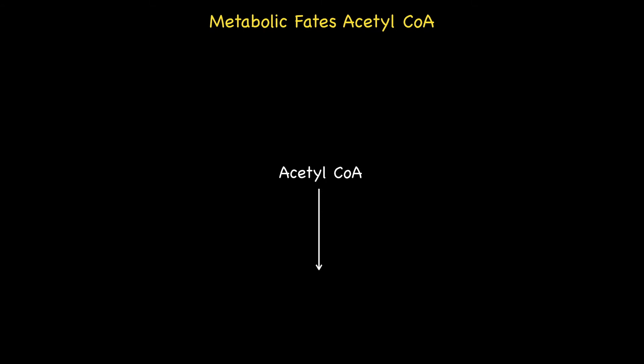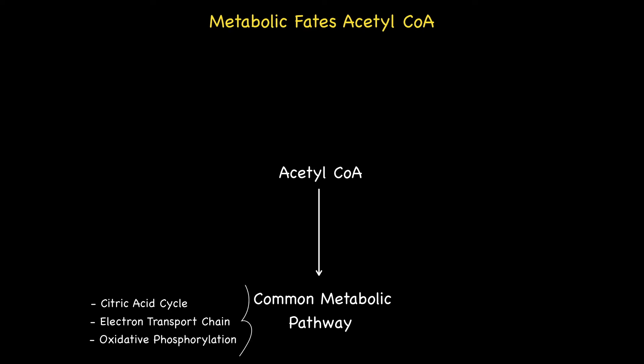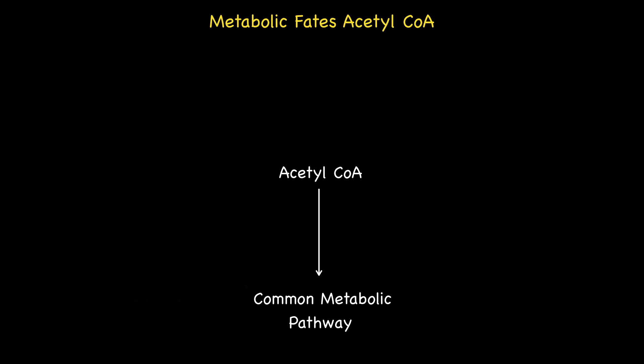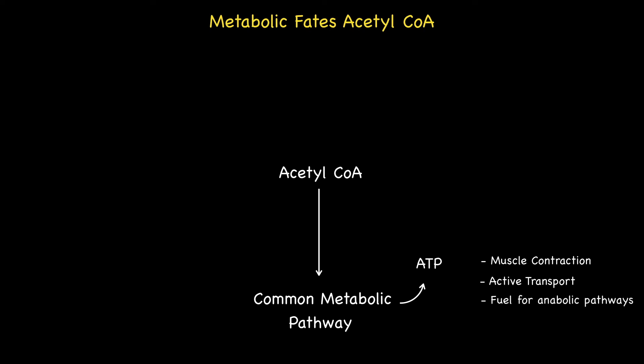Let's first tackle the most familiar fate of Acetyl-CoA, namely its entry into the common metabolic pathway, which is made up of the citric acid cycle, electron transport chain, and oxidative phosphorylation. This ultimately leads to the formation of ATP and occurs in the mitochondria of cells. The ATP is then used for a variety of purposes, including muscle contraction and active transport, while also acting as a fuel source for anabolic pathways such as lipogenesis. Entry of Acetyl-CoA into the common metabolic pathway occurs under virtually all circumstances, but is especially high during moderate to high levels of physical activity when aerobic respiration dominates ATP production.